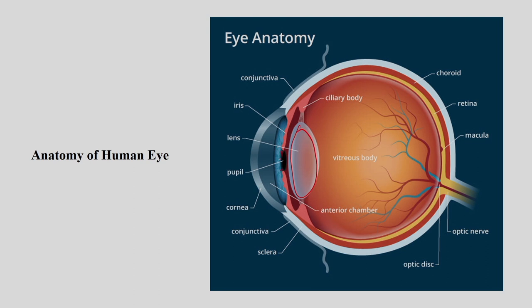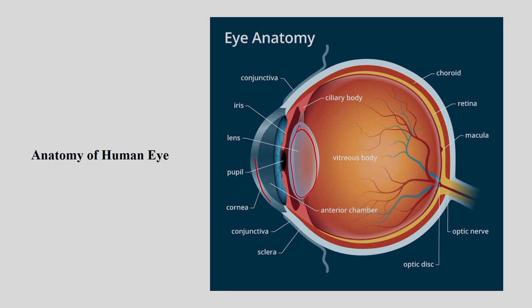Here you can see the major important part — the lens is situated here. This is the pupil, which gets constricted or dilated based on the concentration level, visual acuity required, and the impact of the physical environment. This is the cornea, and here you can see the sclera, the optic nerve, and the optic disc. This is the retina where images are going to form. This is the basic structure of the eye.